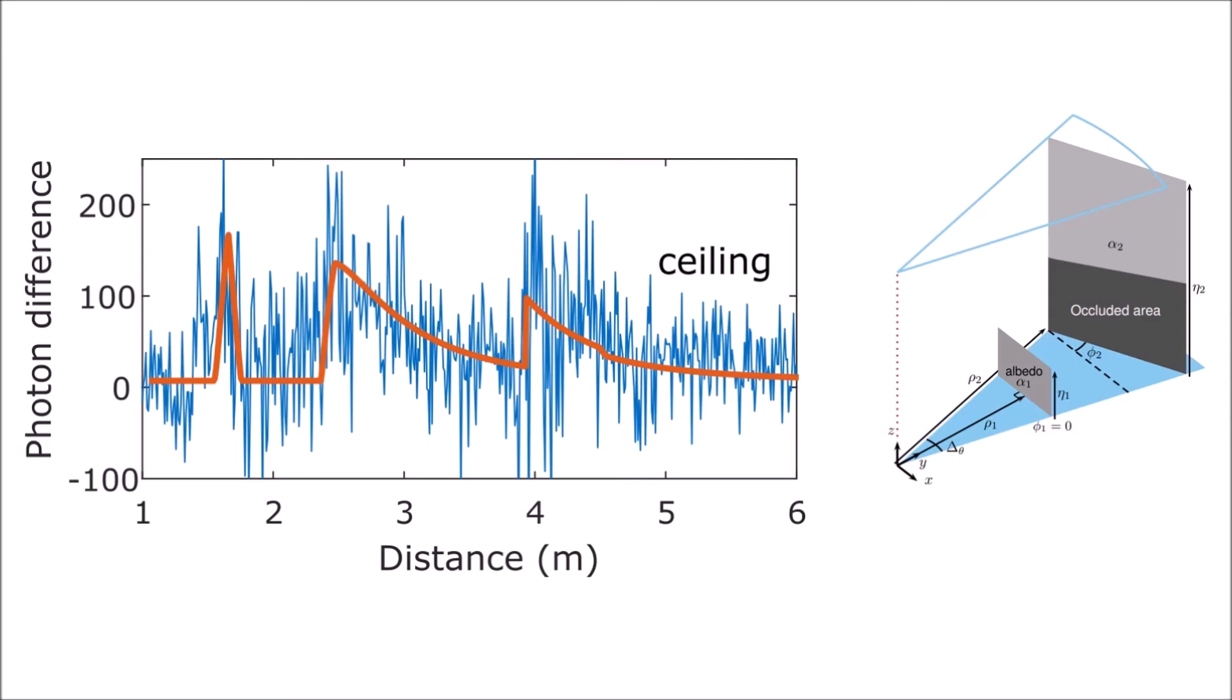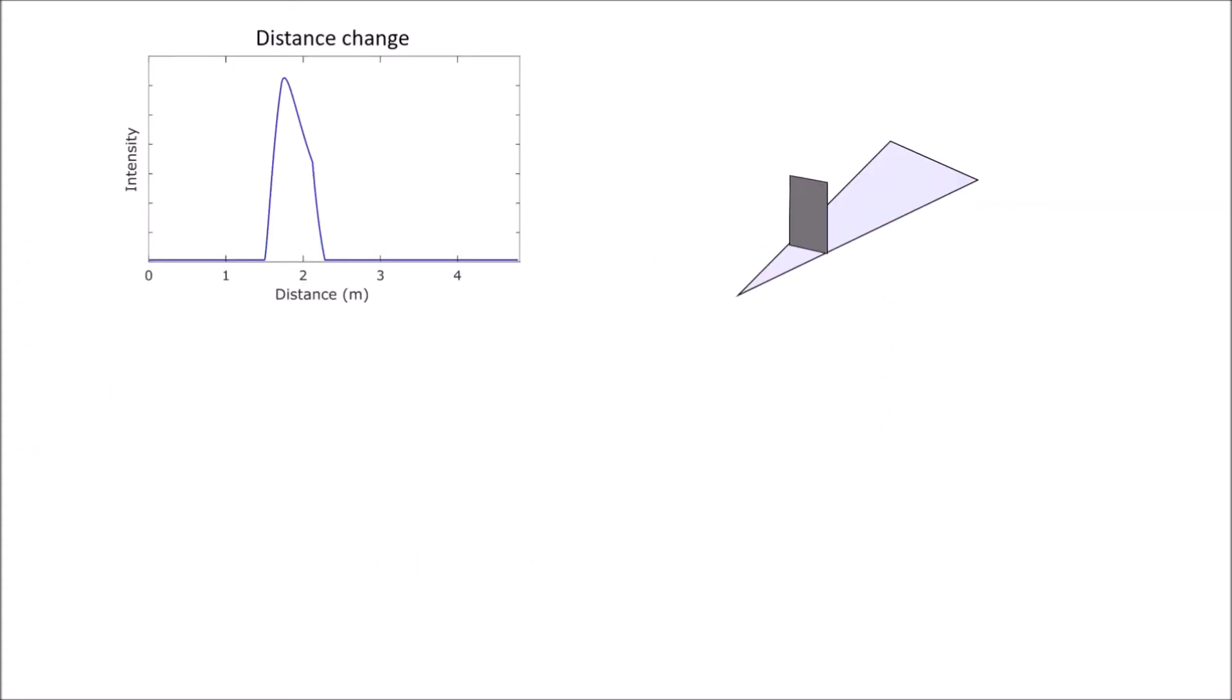We estimate the model parameters given our measurement histograms, using a reversible jump Markov chain Monte Carlo algorithm. The high angular resolution of our imaging system relative to the floor plane is achieved using the edge occlusion to direct light only in certain directions.